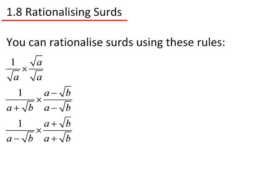If you had 1 divided by root a, you'd multiply the top and bottom by root a. If you have a fraction where you have 1 divided by a plus or minus root b, then you multiply the top and bottom by the opposite. So if you had plus, you'd multiply it by minus, and if you had minus, you'd multiply it by plus.